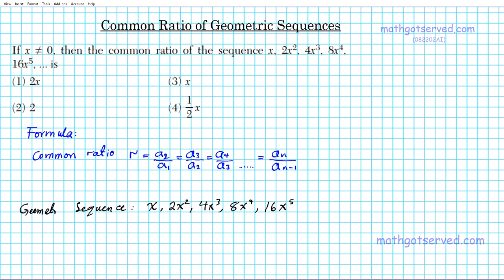The term 'common ratio' only applies to geometric sequences. When you hear ratio, think multiplication. However, if we're talking about a common difference, then we have an arithmetic sequence. The language in the question tells you what type of situation you're dealing with.